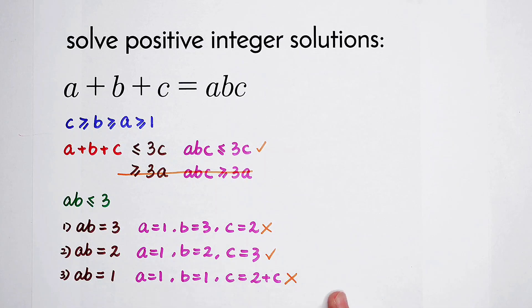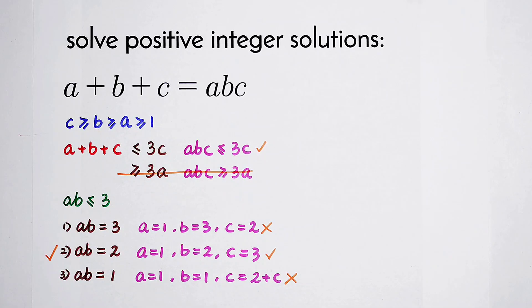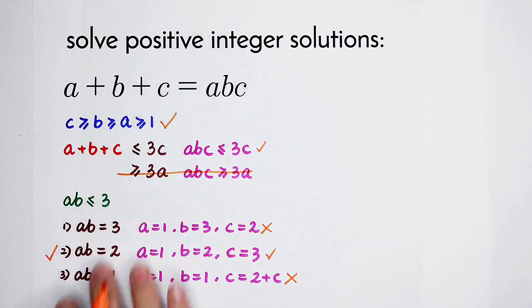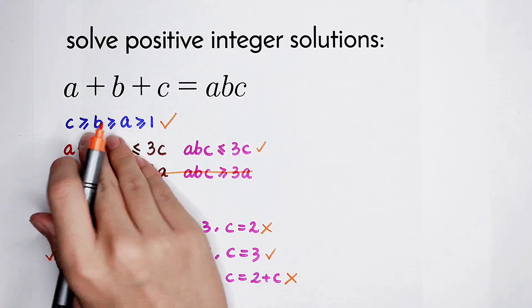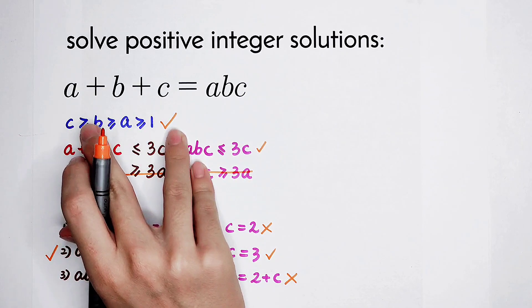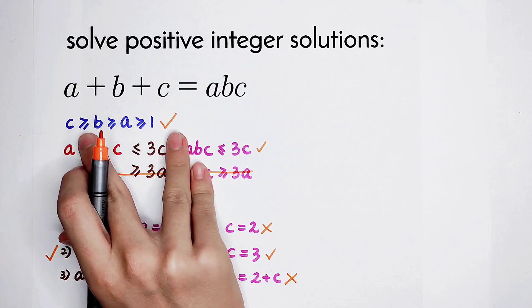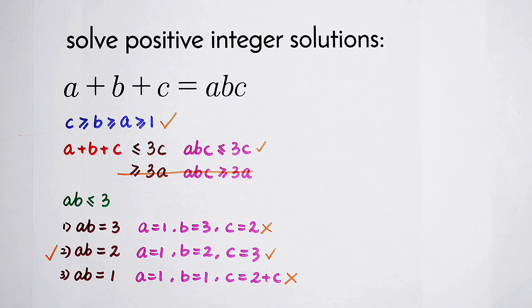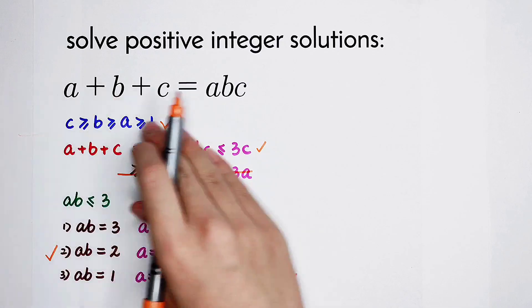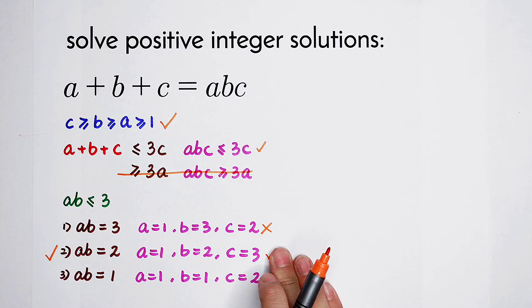So we have 3 cases and only 1 valid case. But remember, this solution comes from the assumption C ≥ B ≥ A ≥ 1. You can also let A be the largest or B be the largest, giving 6 possible orderings in total. Because each ordering yields exactly one solution, we have 6 solutions in total for this equation.